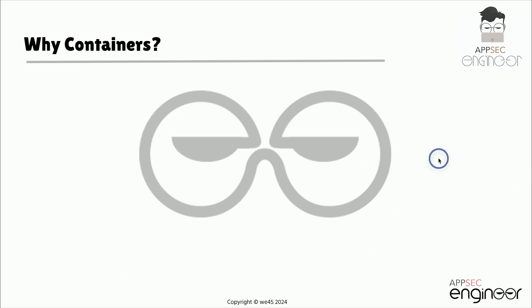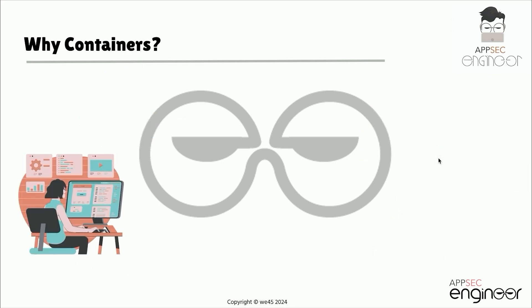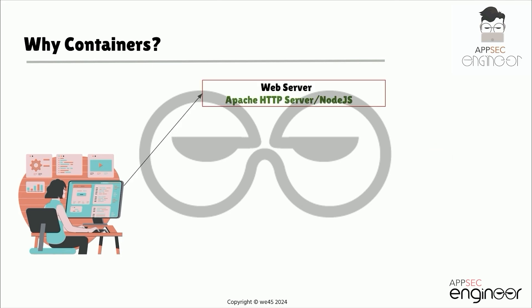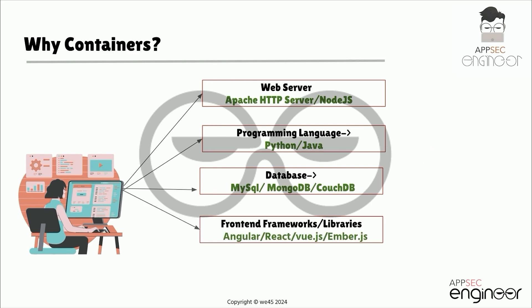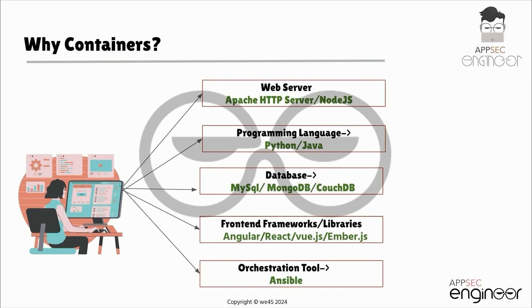Now, suppose we have the requirement of setting up an end-to-end stack. This includes various technologies like web servers — Node.js, Apache, HTTP servers — or programming languages like Python, Java, Go, C++, and so on. Or it can be databases like MySQL, MongoDB, or front-end frameworks like React, Angular, or even orchestration tools like Ansible. There were a lot of issues developing an application with all these components.